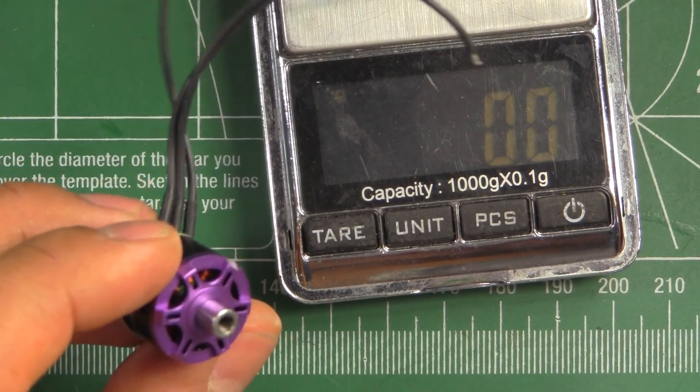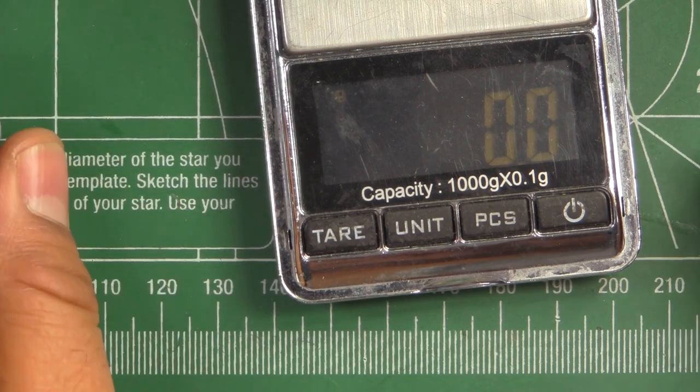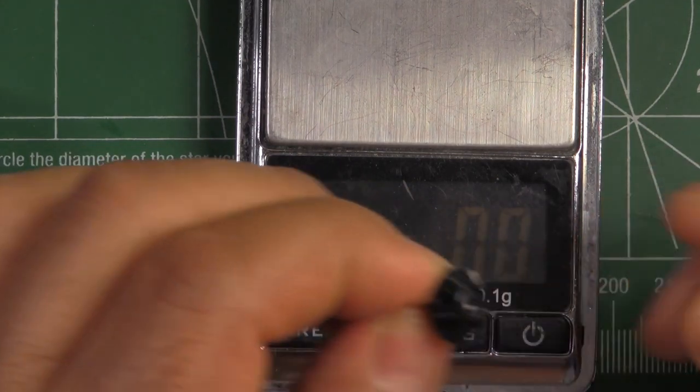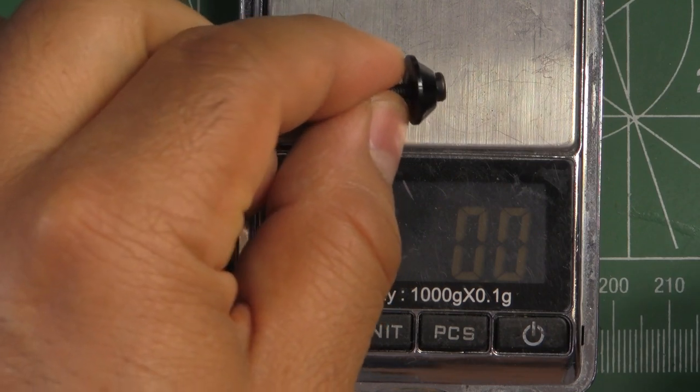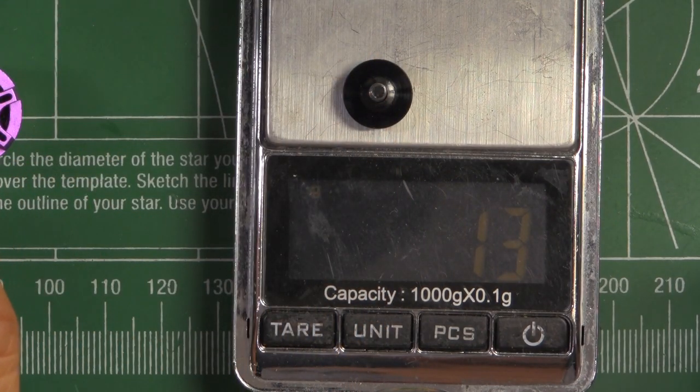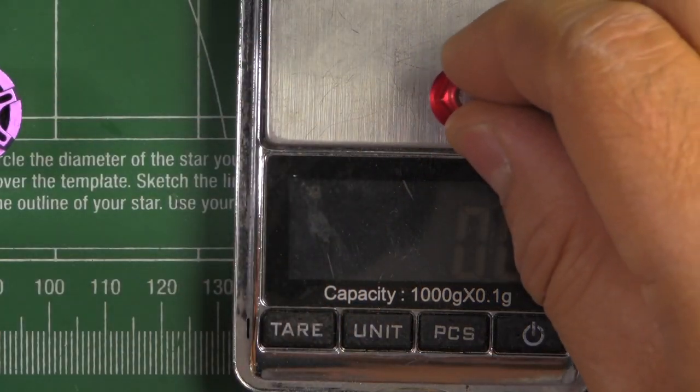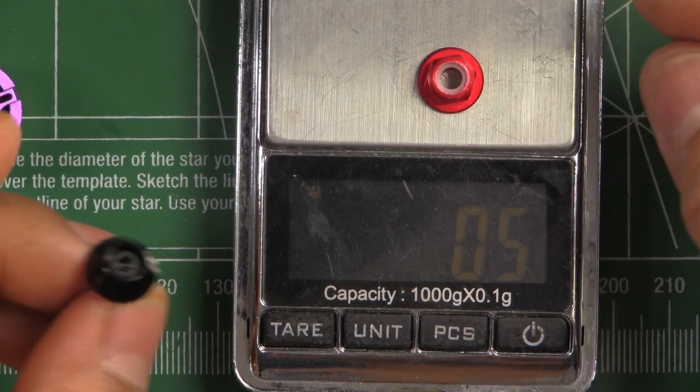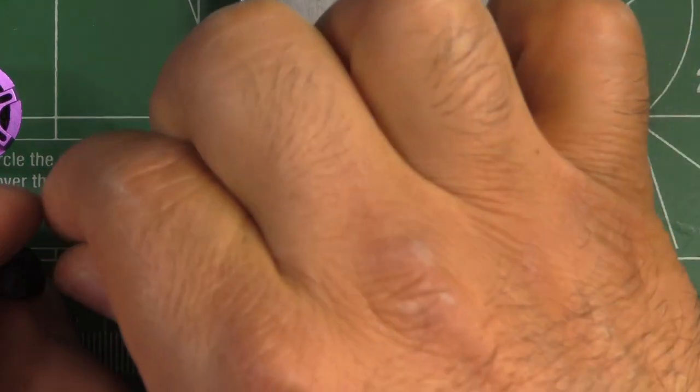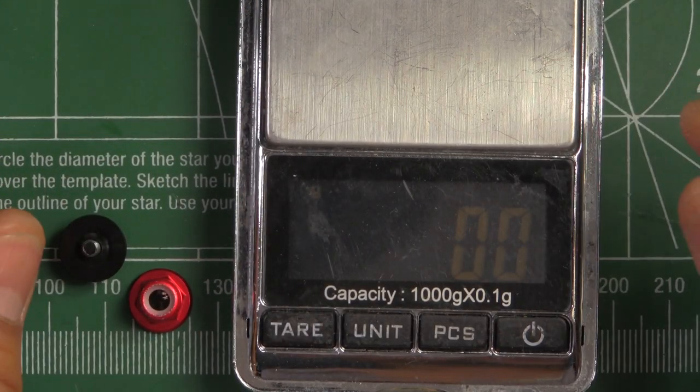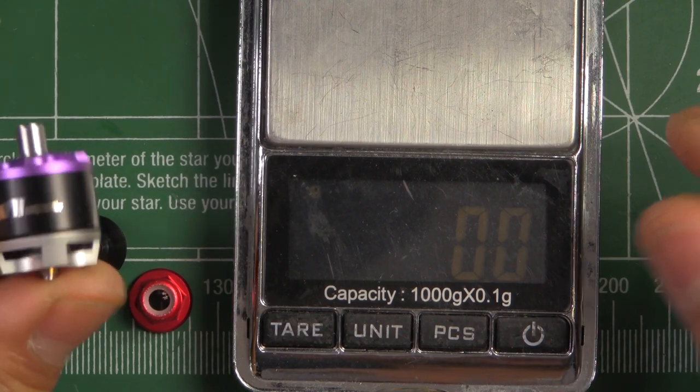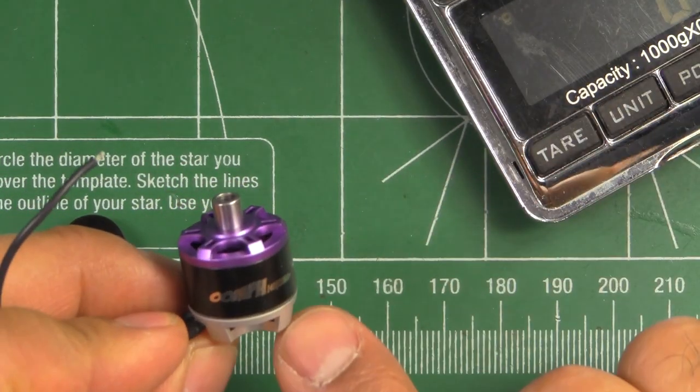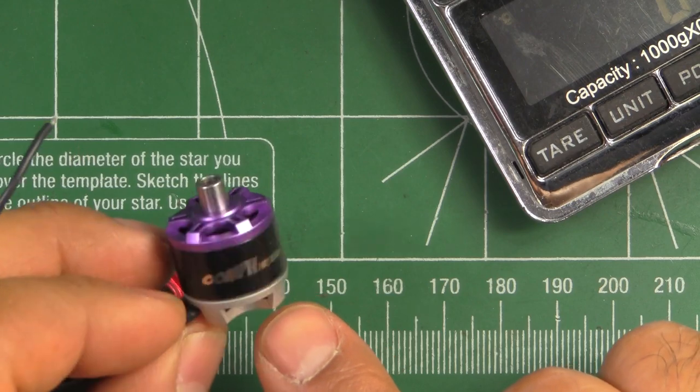Pretty close to the original Brother Hobby. The one thing that is slightly heavier is the prop mounting hardware. This one is 1.3 grams compared to just the regular lock nut, which is about 0.5 to 0.6 grams. So that's a little bit heavier. But if it's overall about one gram or less heavier, I wouldn't call that a deal breaker. So there you go, that's the overview of the motor. Now let's check out the thrust test.